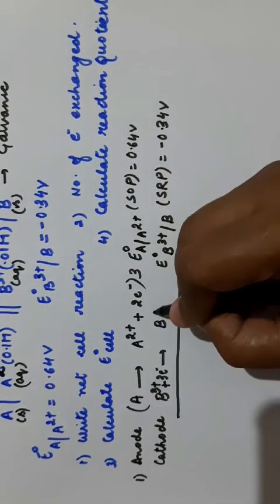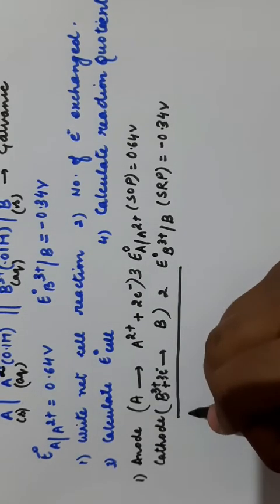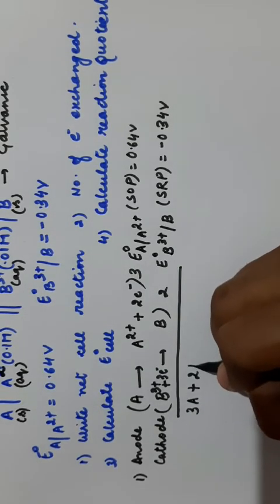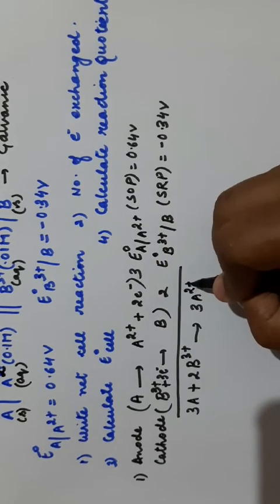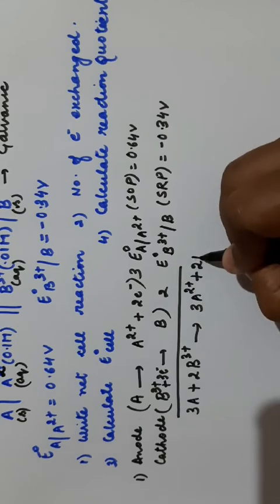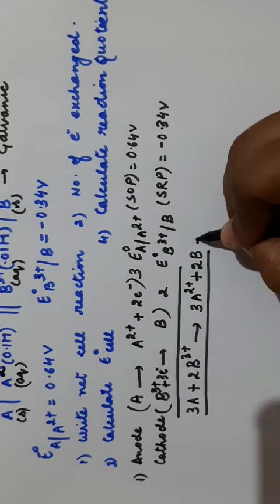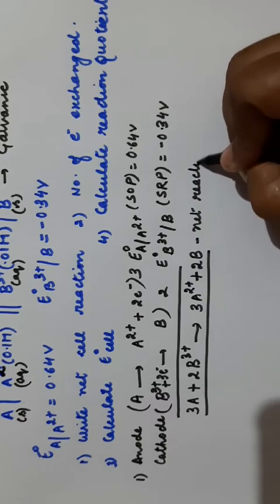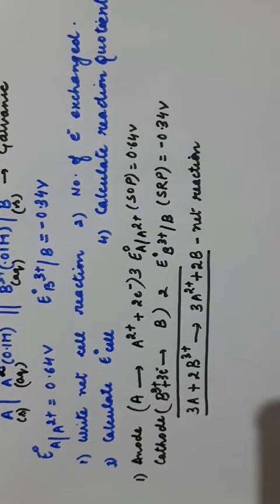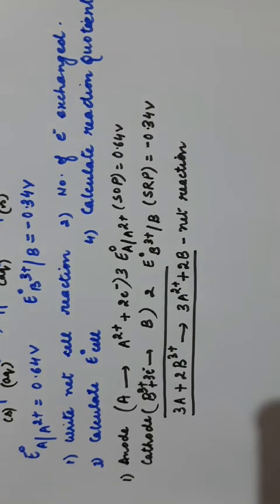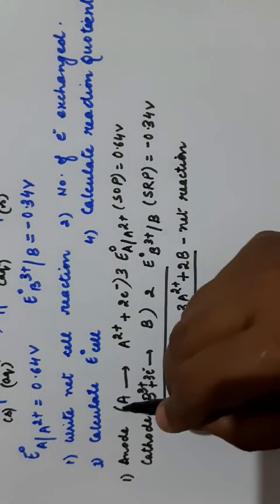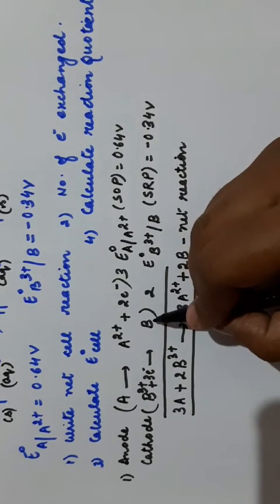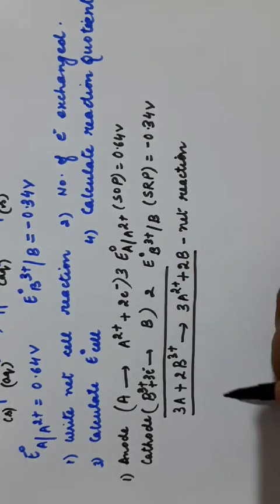To cancel out the electrons, multiply the anode reaction by 3 and the cathode reaction by 2. So you get: 3A + 2B³⁺ → 3A²⁺ + 2B. Electrons get cancelled out. This is the net cell reaction taking place in the galvanic cell. Due to this reaction, chemical energy is converted to electrical energy. To write the net cell reaction, write the reactions at anode and cathode, cancel out the electrons by multiplying by a suitable number, then add the equations.